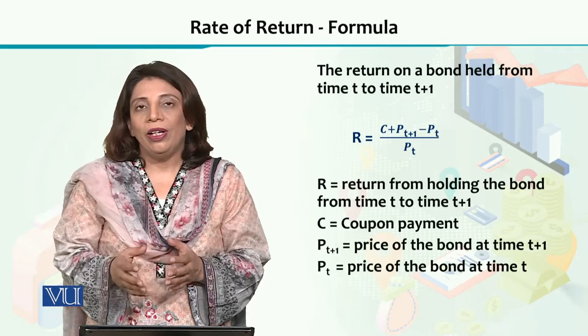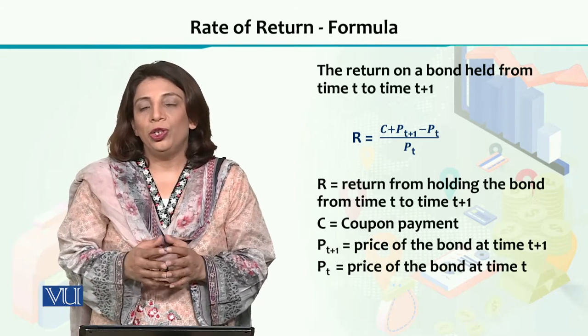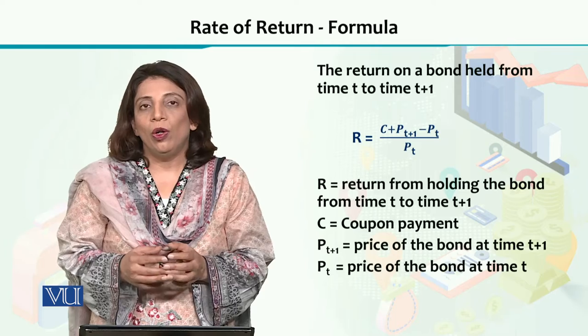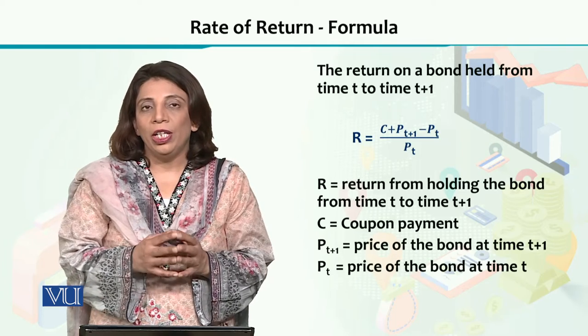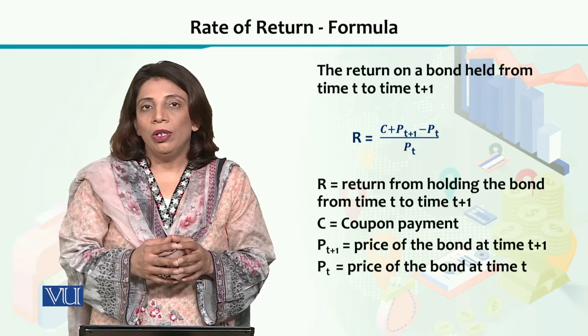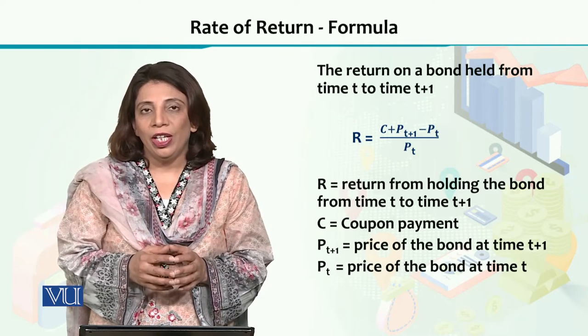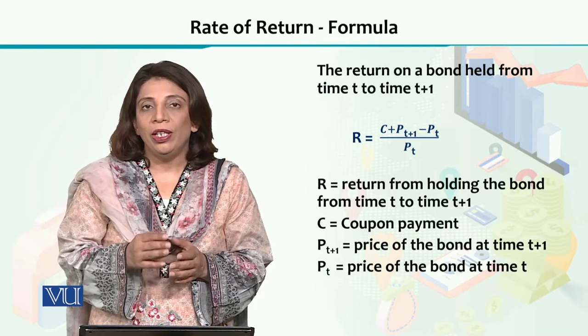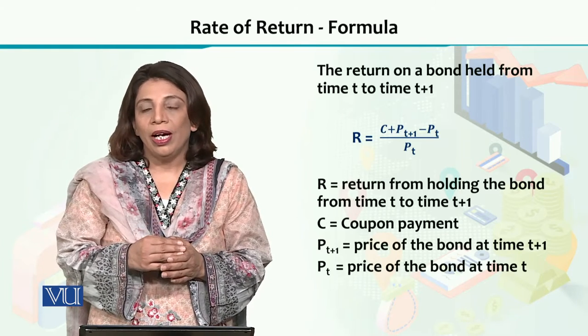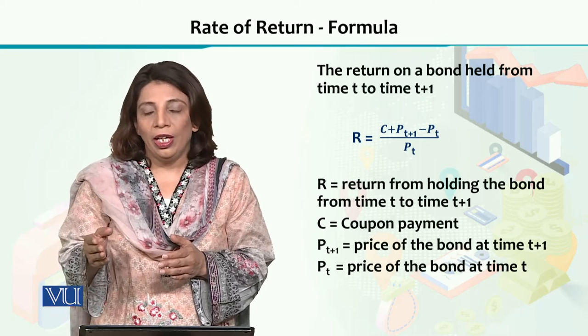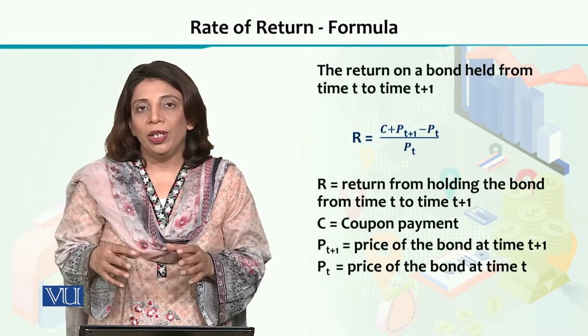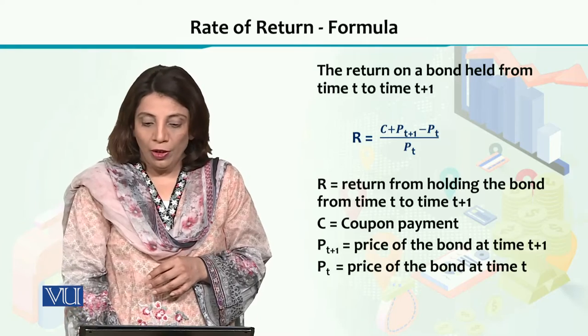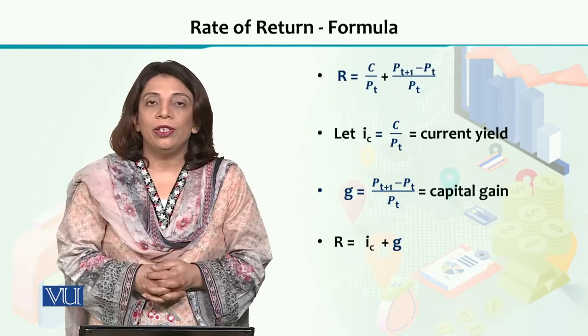In a certain situation that would be considered as t+1. So all we need to do is we are going to take into account the coupon rate or the interest rate, and we are going to add it to the difference between the current price and the initial price, and we are going to divide this by the initial price to get the value of the return on a certain financial instrument.